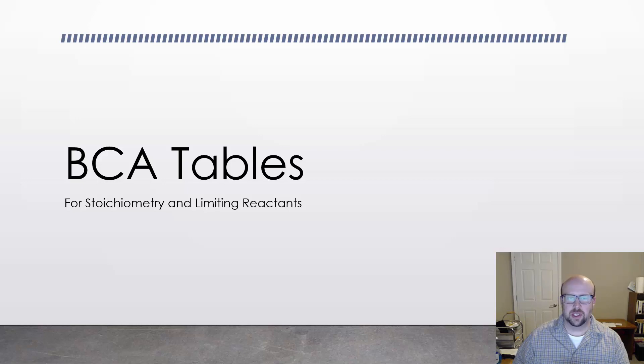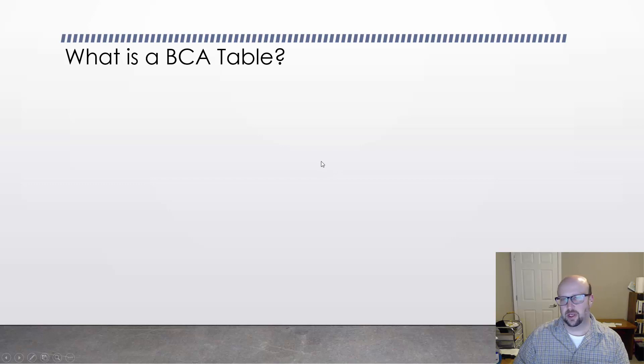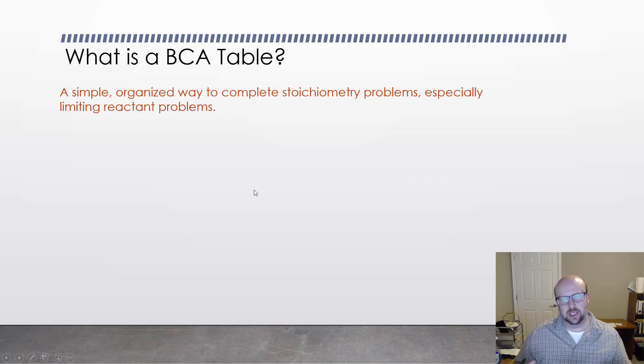Hey kiddos, tonight we're going to talk about BCA tables. These are a really useful tool for us in stoichiometry, particularly when we're calculating things with limiting reactants. A BCA table is essentially a way to organize information or data for us. It helps us calculate stoichiometry problems, especially limiting reactant ones, and allows us to do a whole bunch of different things all at one time instead of having to do multiple separate problems.